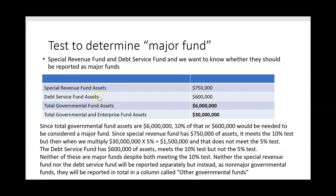Now let's change things. Special revenue fund assets stay at $750,000 and debt service fund assets at $600,000, but total governmental fund assets drop to $6 million. 10% of $6 million is $600,000 — so now special revenue meets the 10% test with its $750,000. But we then apply the 5% test: 5% of $30 million total governmental and enterprise fund assets equals $1,500,000. The special revenue fund only has $750,000, so it does not meet the 5% test and would not be a major fund.